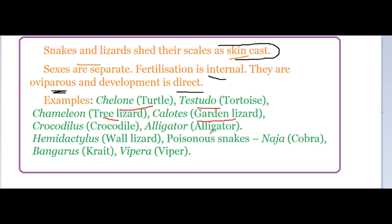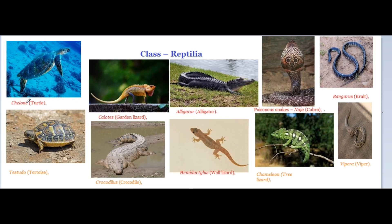Important examples include: crocodile, alligator, Hemidactylus (wall lizard), poisonous snakes — Naja or cobra, Bungarus (krait), Vipera (viper). Viper and Bungarus are highly poisonous. These are all the important examples and features of Class Reptilia.